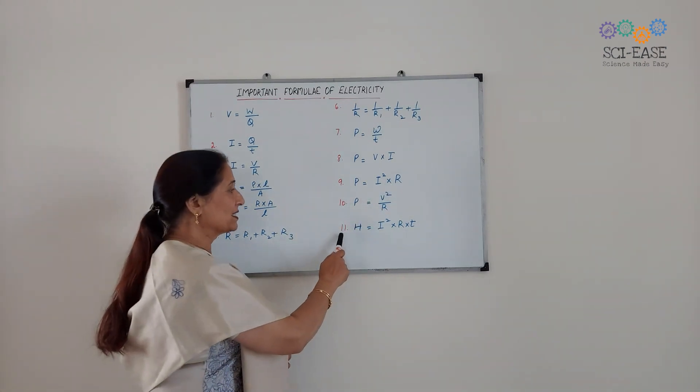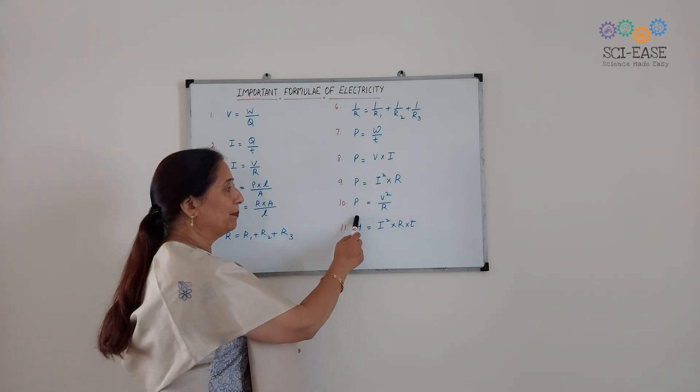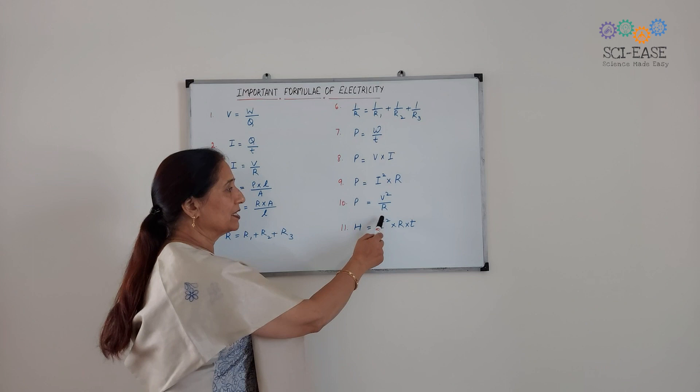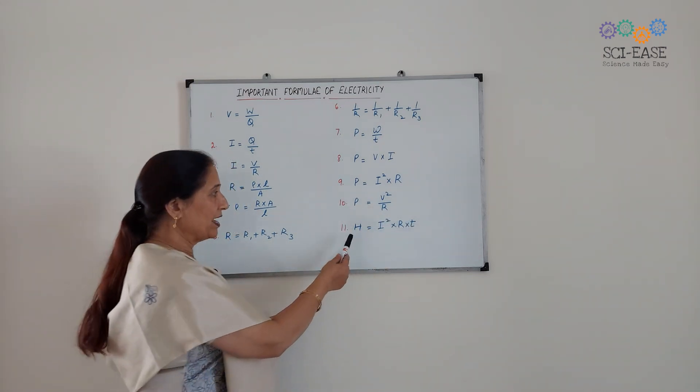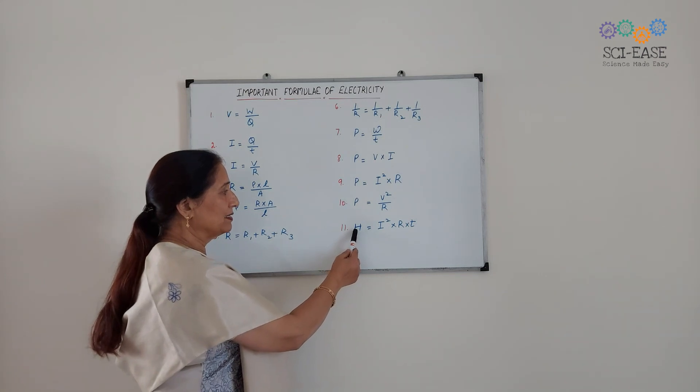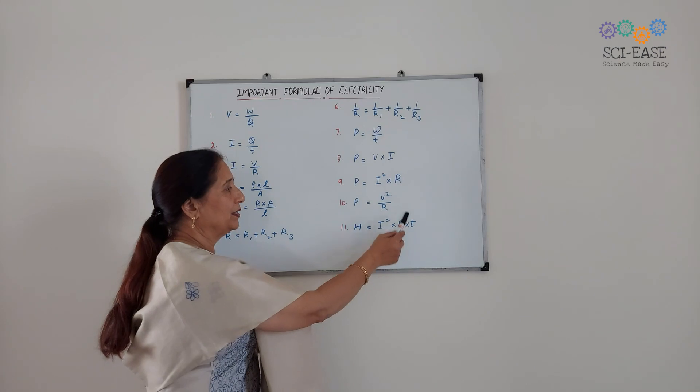So the next and last one is W equals I squared into R into T, or for the heating effect, H equals I squared into R into T.